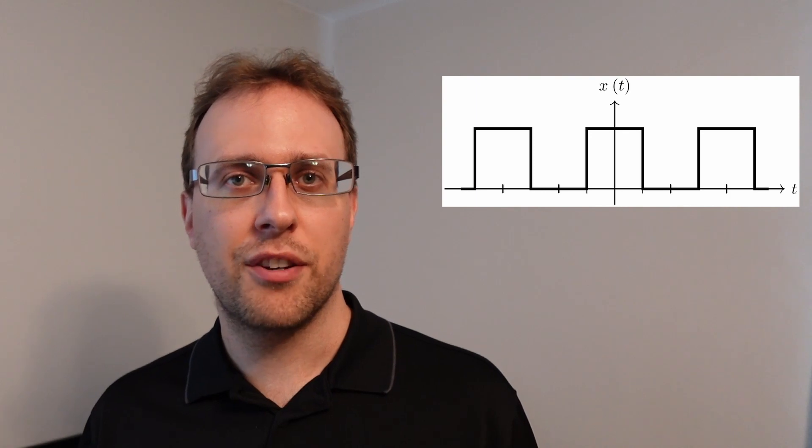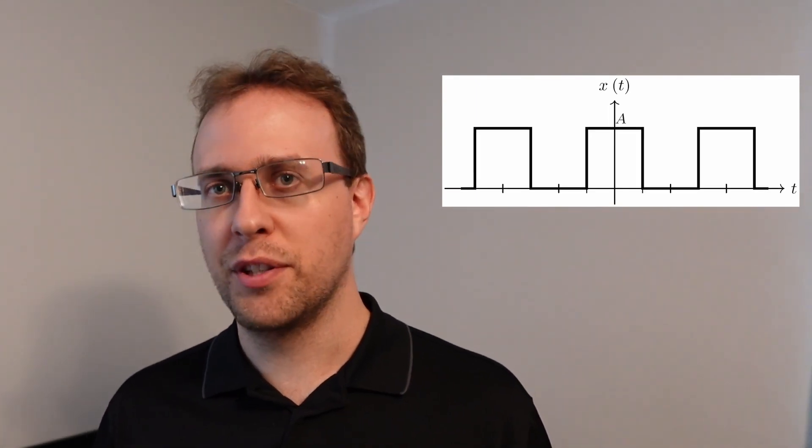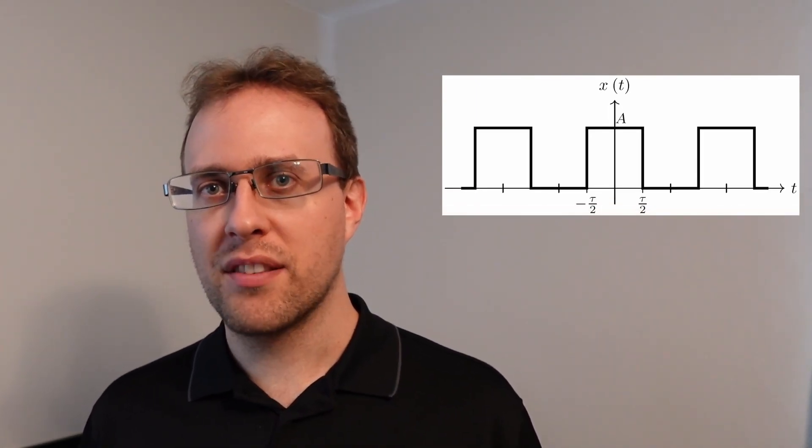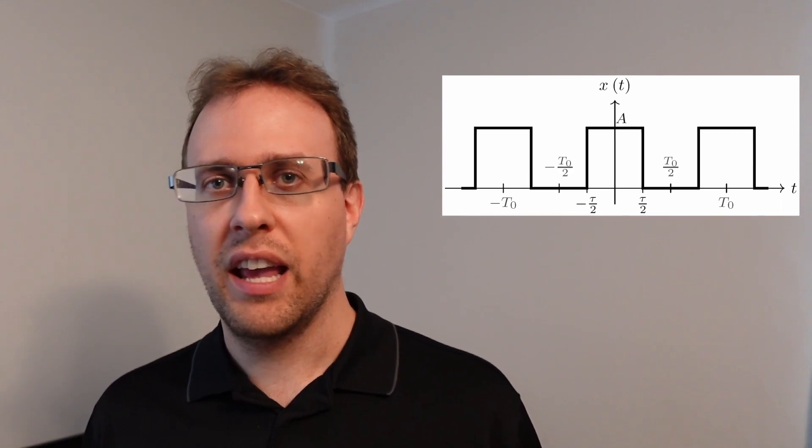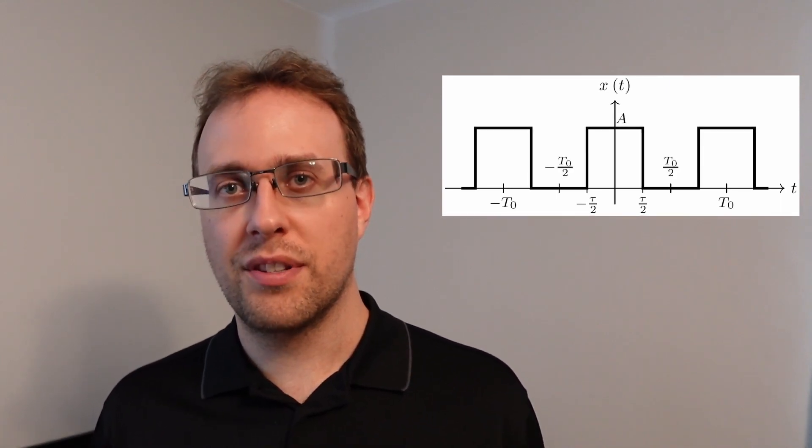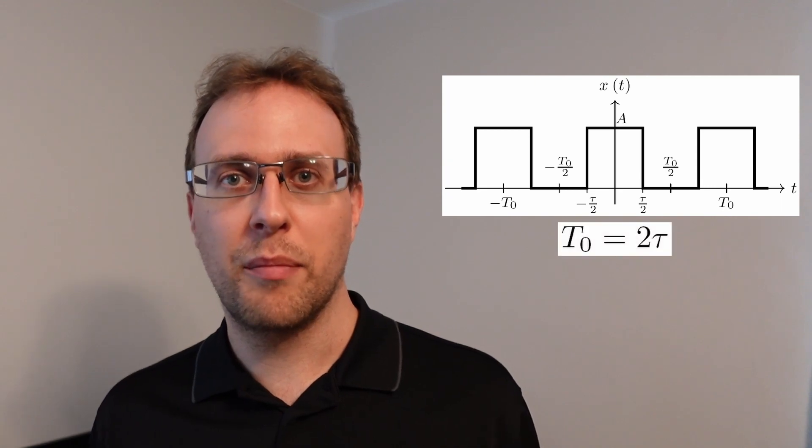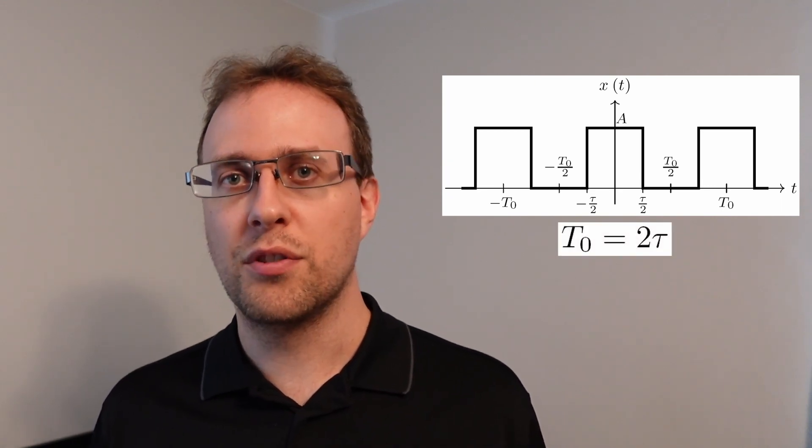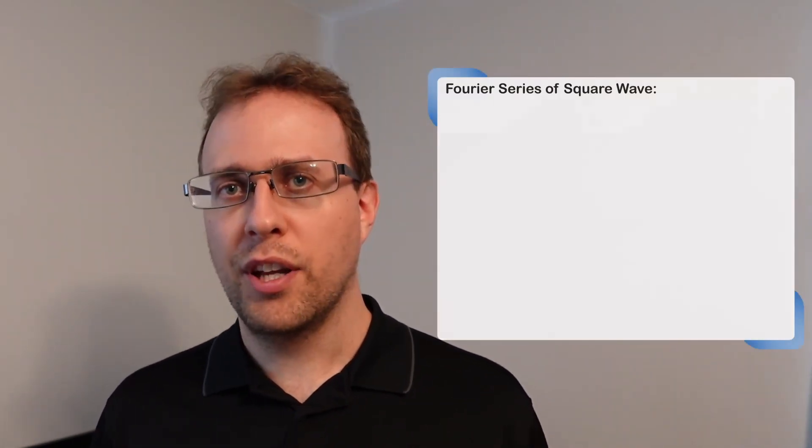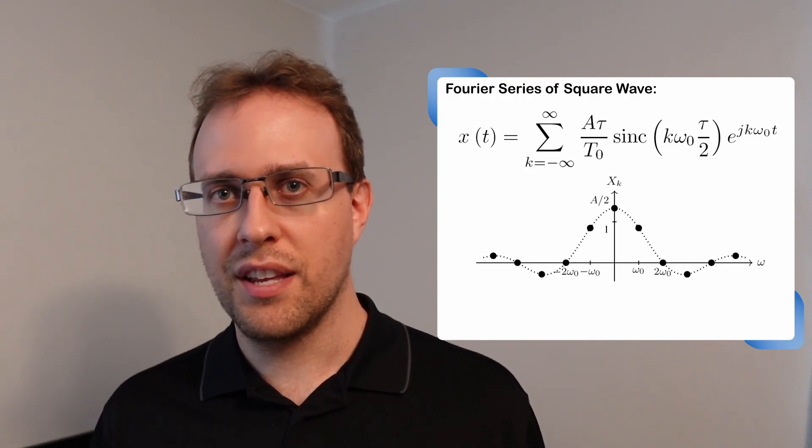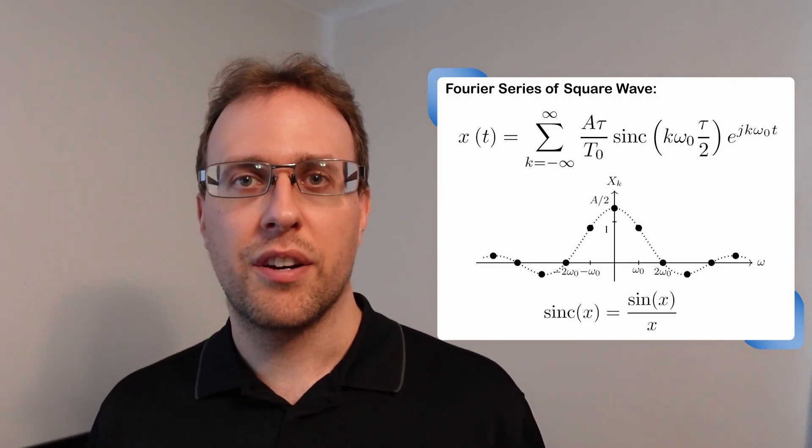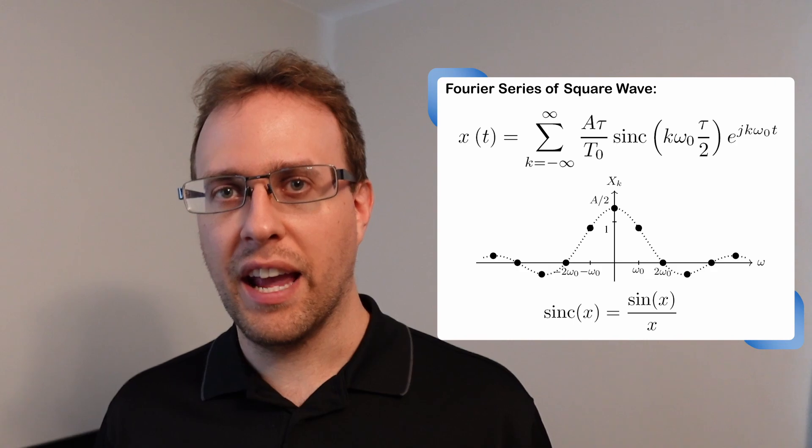It's best to see this in an example. So let's consider a square wave that's centered at t equal to 0. It has an amplitude of A. The square wave remains high for tau seconds, and it has a fundamental period of t0 seconds. For this example we'll look at the case where the fundamental period t0 is equal to 2 times tau. In our last video we showed how this Fourier series is samples of a sinc function, where sinc of x is equal to sin x over x.